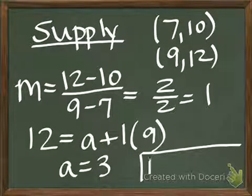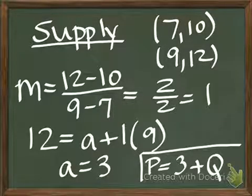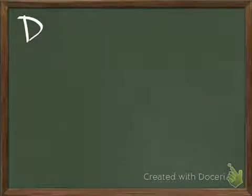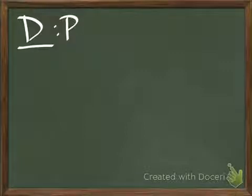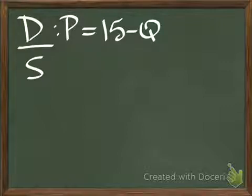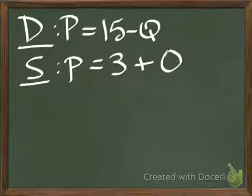Our supply curve can be represented by P equals 3 plus 1Q. Again, the 1 is given, so I'll just write the Q by itself. So, now that we have both our demand curve, which is represented by P equals 15 minus Q, and our supply curve, P equals 3 plus Q, we can use these two linear functions to solve for market equilibrium.